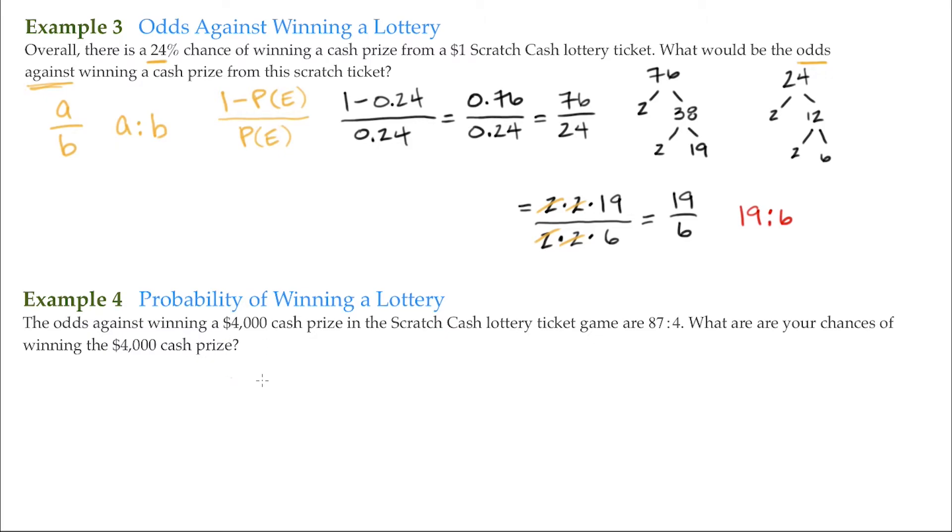This example is kind of the opposite of the previous one. There we were given the percentage and wanted to know the odds. Here we're given the odds and want to know our chances of winning. So again, if we have a over b, which translates to a to b.